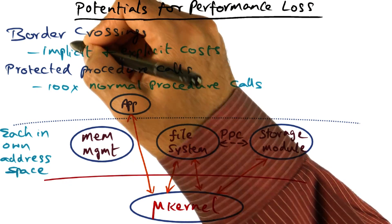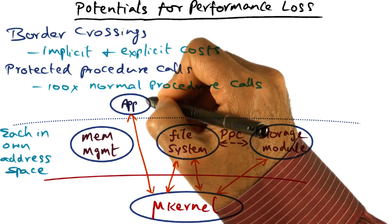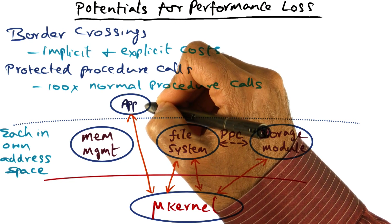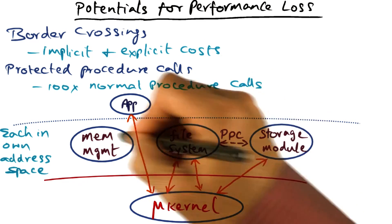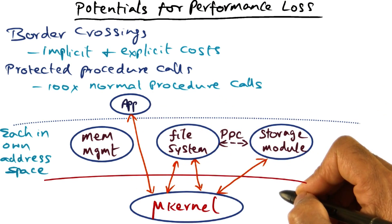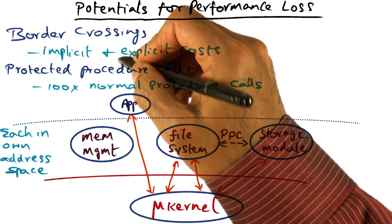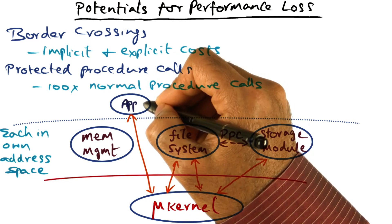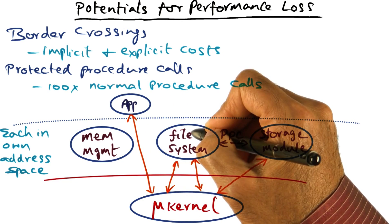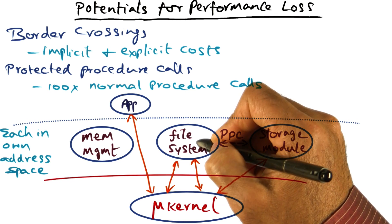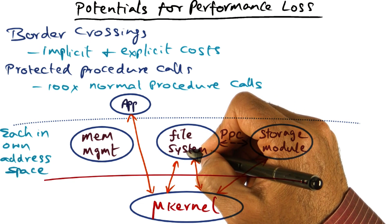In order to accomplish a particular service that an application has requested, the service is actually provided by server processes above the microkernel. Therefore, there are border crossings involved going from the application to the microkernel to the particular service that we're talking about — let's say a file system service.